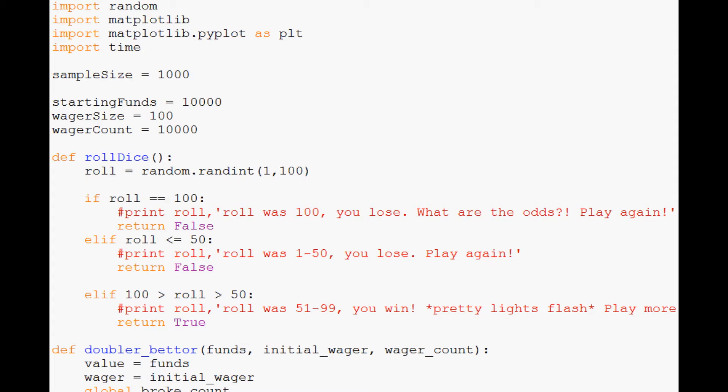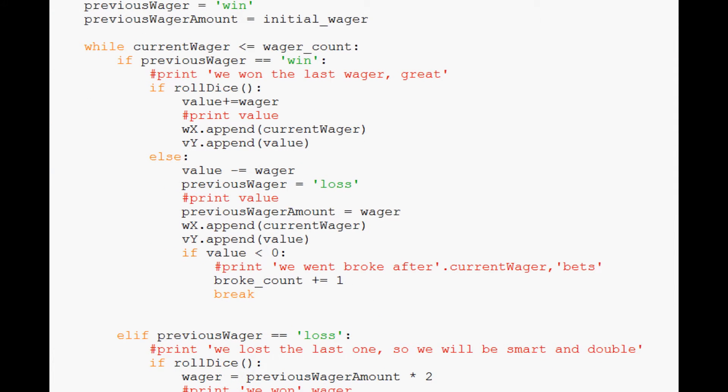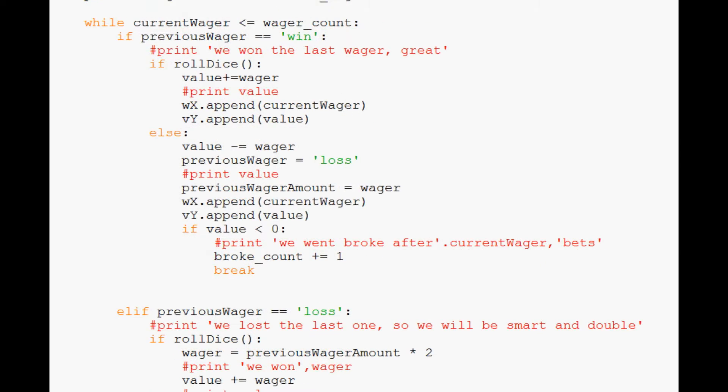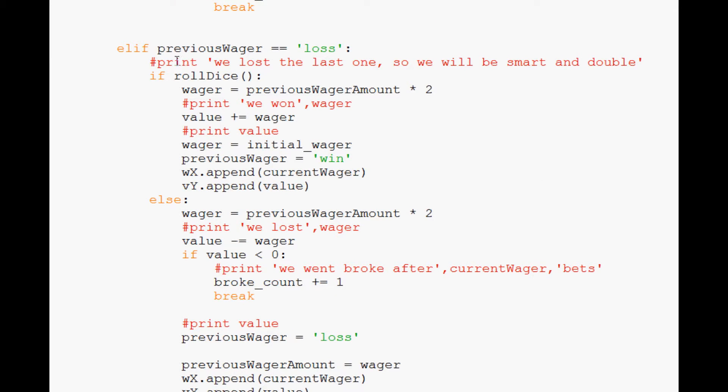Let's go ahead and fix that. The first thing that we want to do is we're going to visit our doubler better. Let's see if the previous wager was a loss. What we're going to do is we're going to roll dice, the wager is going to equal previous wager times two.